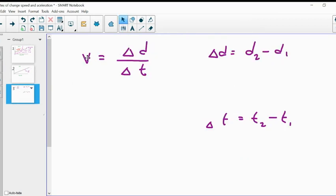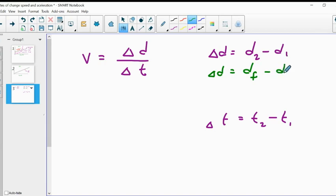So once again, our velocity or our speed is the change in distance divided by the change in time. And as we discussed in our rate change video, a change in distance is the second distance subtract the first distance. Or we could say that the change in distance is the final distance subtract the initial distance. Either or is acceptable.